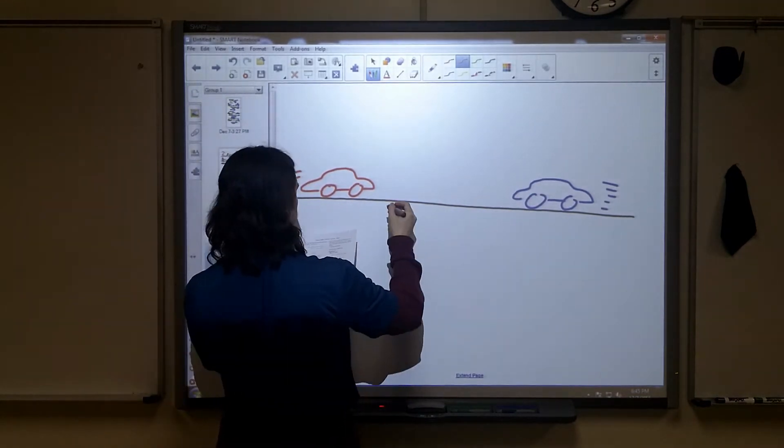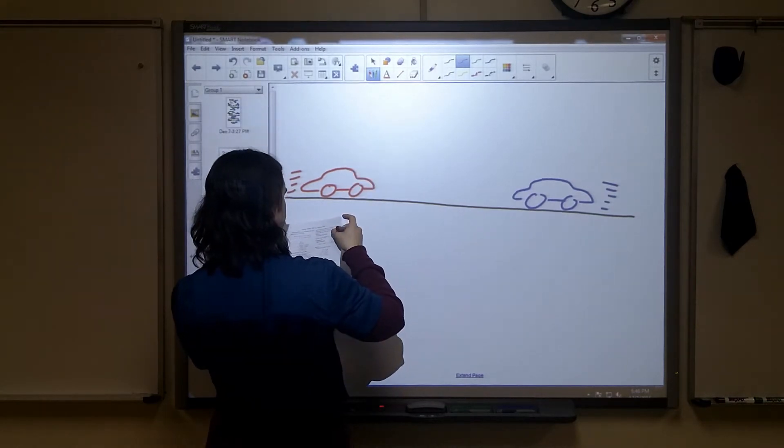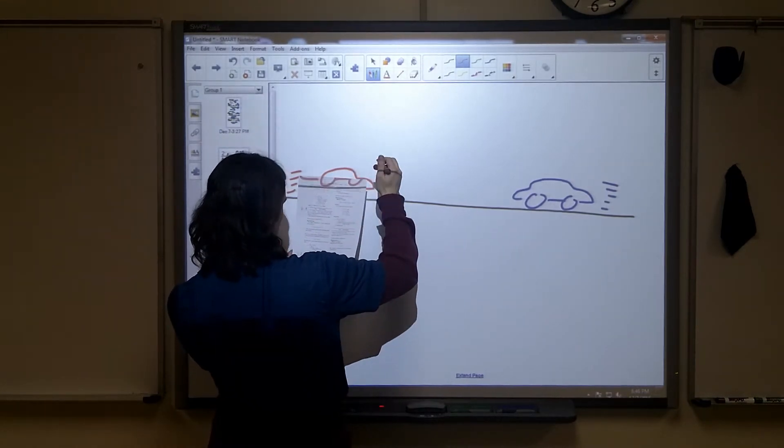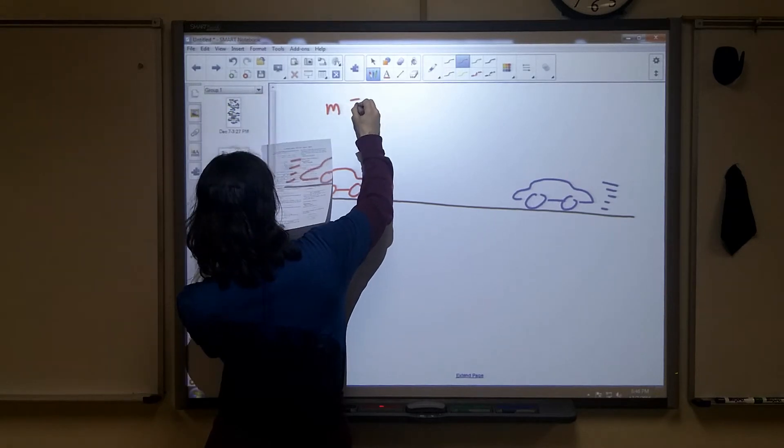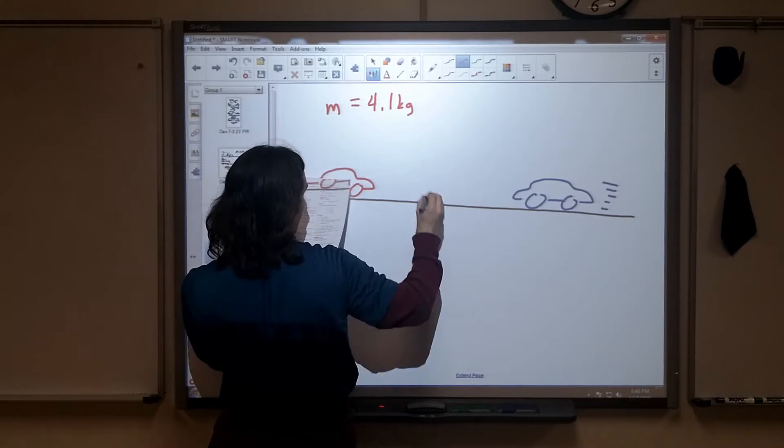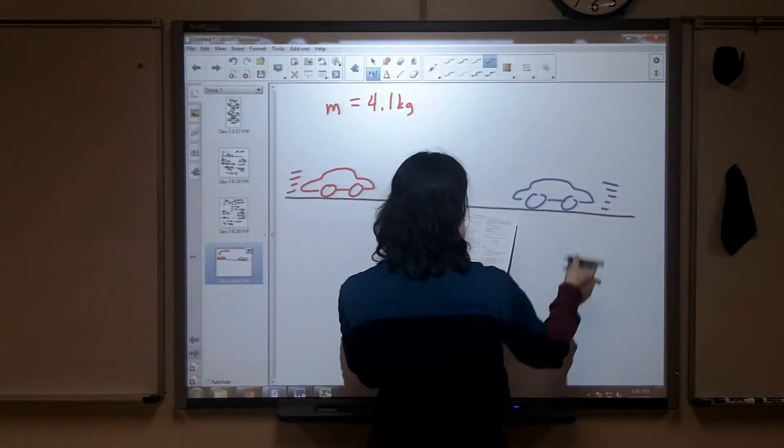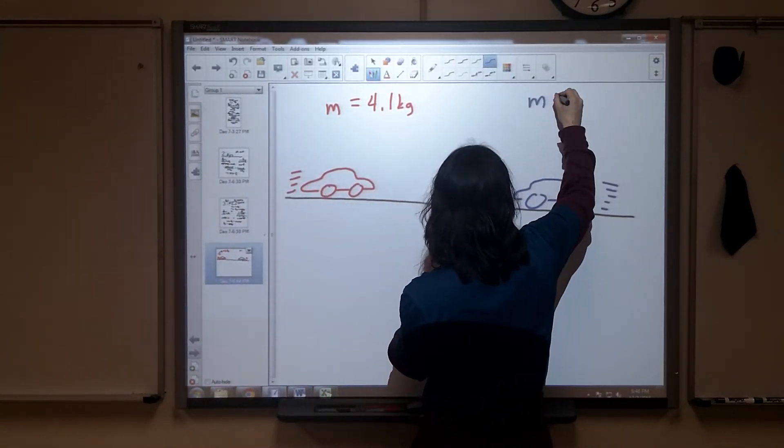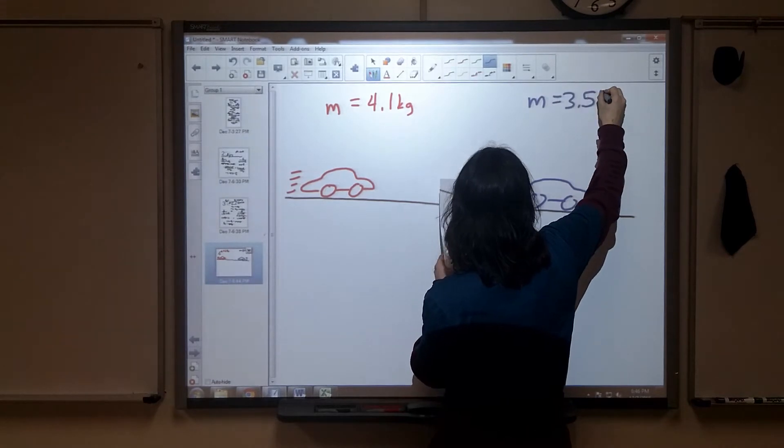We just know that they're both headed towards each other. The mass of the first car, we'll call that the red one, is 4.1 kg. And the mass of the blue car is 3.5 kg.